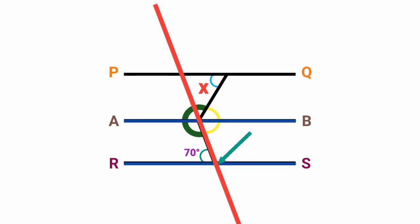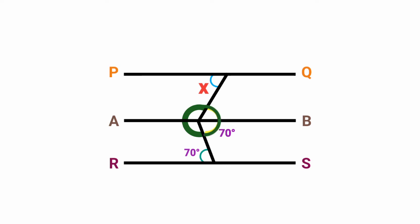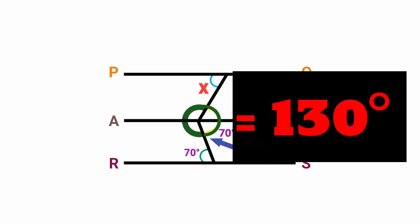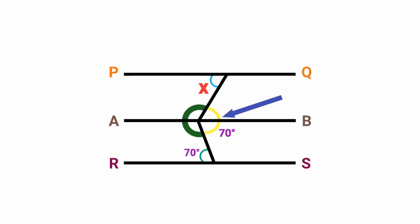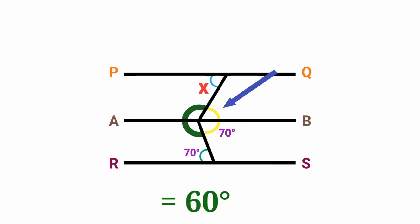Since the transversal intersects both parallel lines, the alternate angles are equal. So this angle here is alternate to the 70-degree angle, meaning it is also 70 degrees. Now, the whole angle from here to here is 180 degrees. To find the remaining angle, we have 180 degrees minus 70 degrees, which equals 60 degrees. So this angle here is 60 degrees.